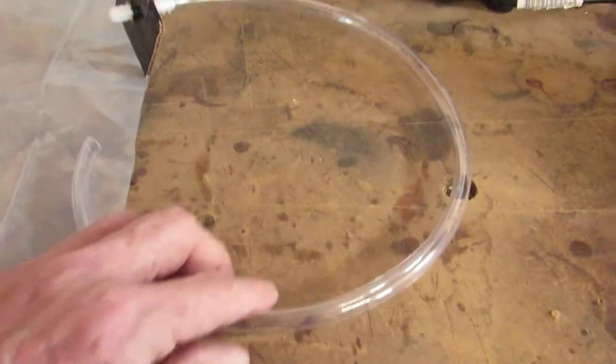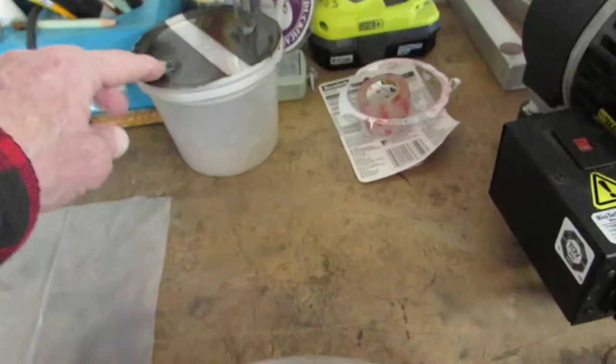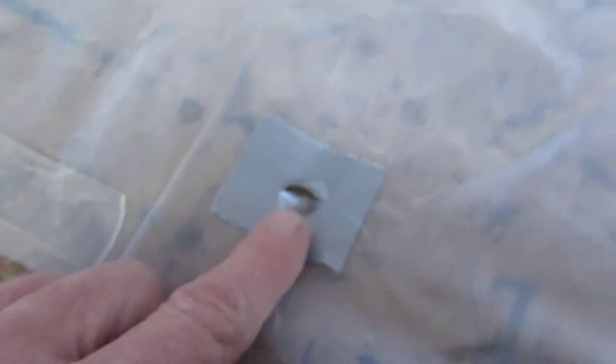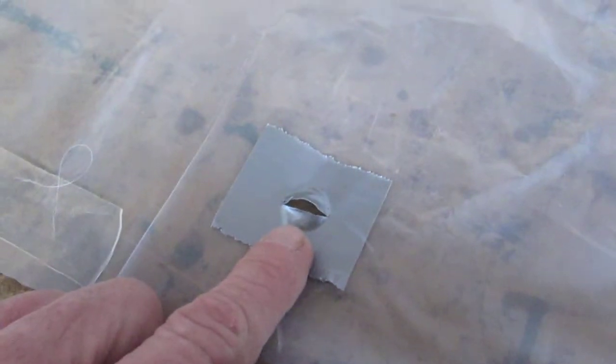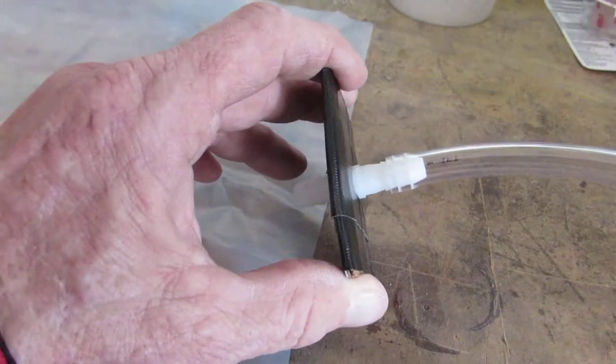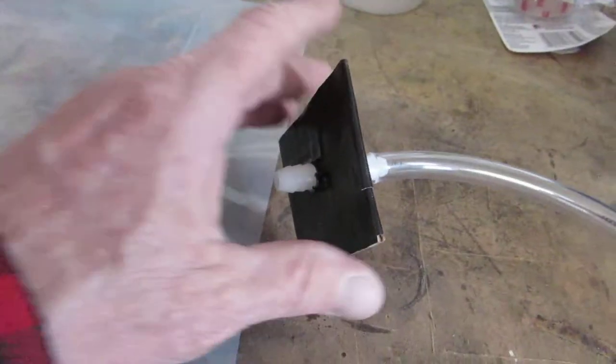And this hose here is going to go into one end. This end is going to stuff in here to suck the air out. And I put this piece of cardboard with gorilla tape on it as a backer, which I will tape down once I have this inside.